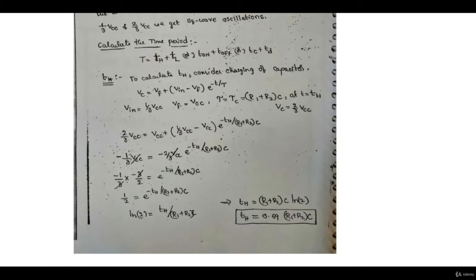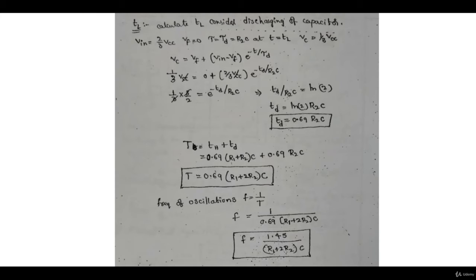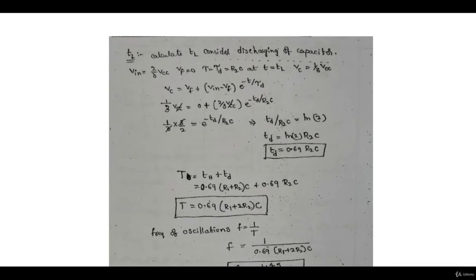Now for the discharging time, we use the same capacitor equation. This time the initial voltage is two-thirds Vcc, the final voltage it is trying to reach is 0 volts through the Qt transistor, with time constant R2·C. At t = Tl, Vc equals one-third Vcc. Plugging in the values and solving, the discharging time equals 0.69·R2·C.